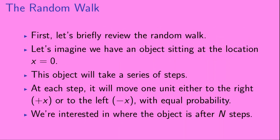First, let's briefly review the random walk. Let's imagine we have an object sitting at the location x equals 0. This object will take a series of steps. At each step, it will move one unit, either to the right toward positive x, or to the left toward negative x, with equal probability.